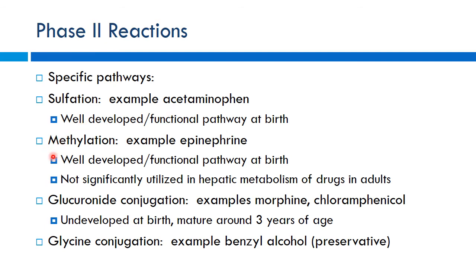Morphine and chloramphenicol have underdeveloped glucuronic conjugation in neonates, making metabolism slower — morphine accumulation risks respiratory depression. Glycine conjugation is also important: benzyl alcohol, a common preservative in multi-dose IV medications, cannot be metabolized well by neonates. This causes 'gasping syndrome.' Therefore, preservative-free medications must be used for neonates. This is a critical age-specific dosing consideration — always check whether a product is preservative-free before administering to neonates.